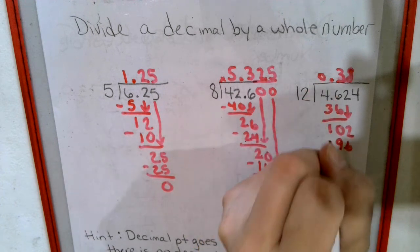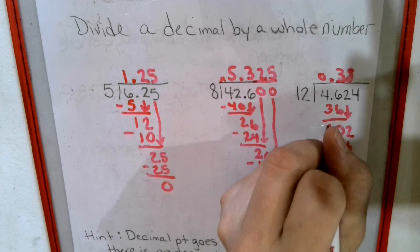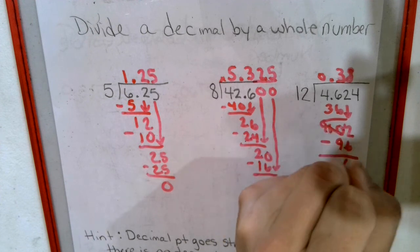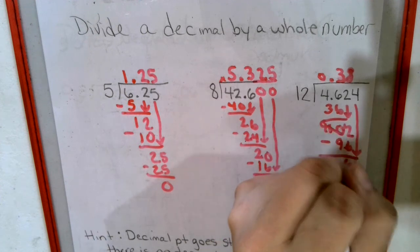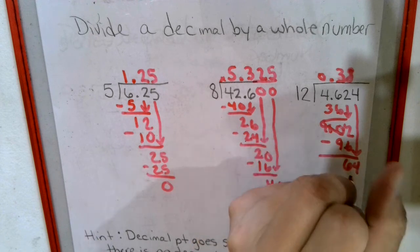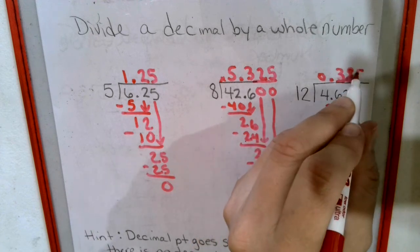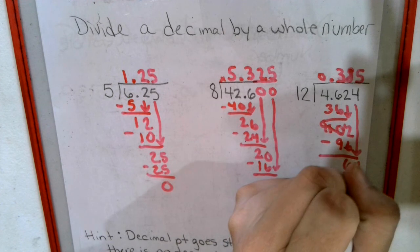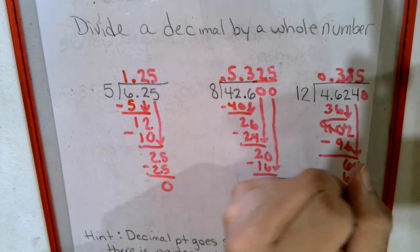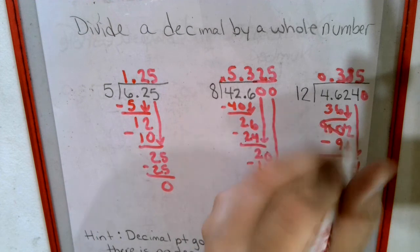96. 6 left over. Bring down our 4. 12 goes into 64 five times to make 60. 4 left over. Bring down a 0. 12 goes into this